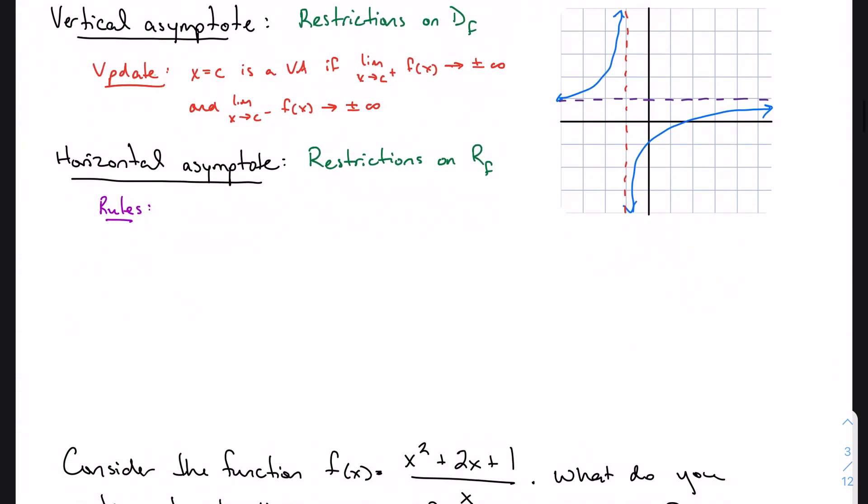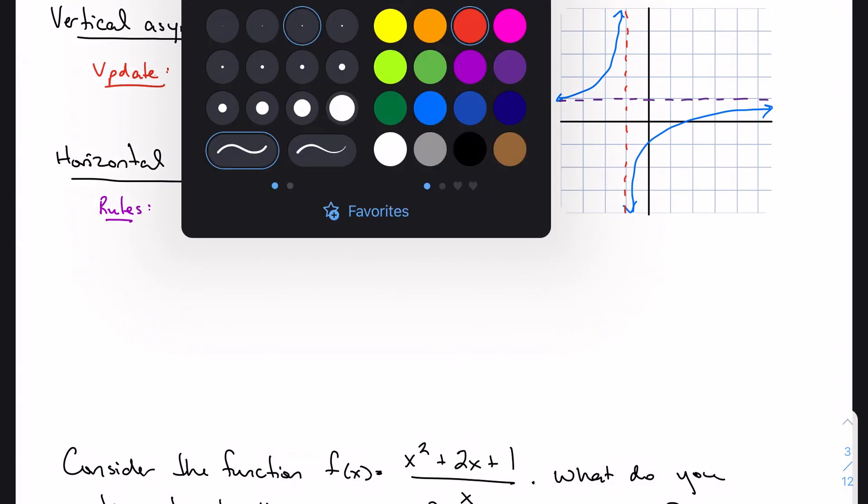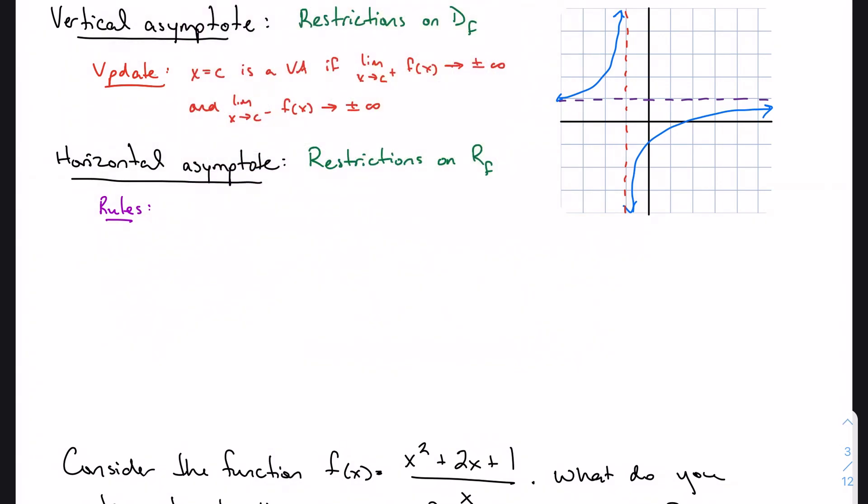We'll do the same thing for horizontal asymptotes. We're used to talking about these as restrictions on the range. You can see from our graph here there's a horizontal asymptote. We had a whole set of rules when we first talked about this. Let's start by defining a rational expression with leading coefficient in the numerator a with degree n, and leading coefficient in the denominator b with degree d.